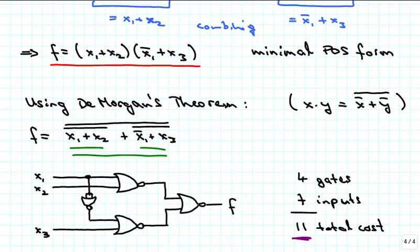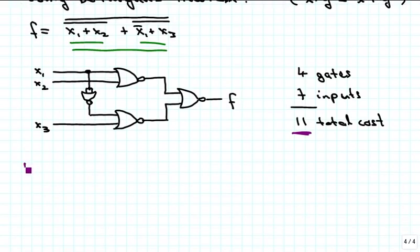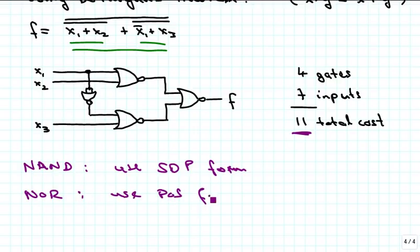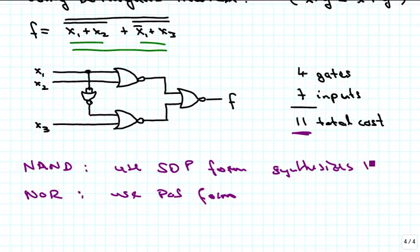The key idea is: if you want a NAND gate implementation, use the SOP form, because that makes a NAND-only implementation straightforward. If you need a NOR gate implementation, use the POS form. The SOP form synthesizes the 1s of the function, and the POS form synthesizes the 0s of the function you want to implement.